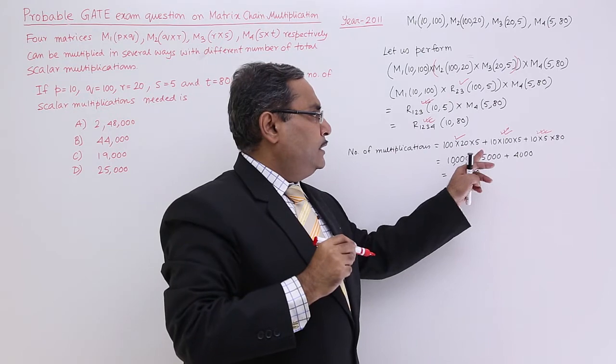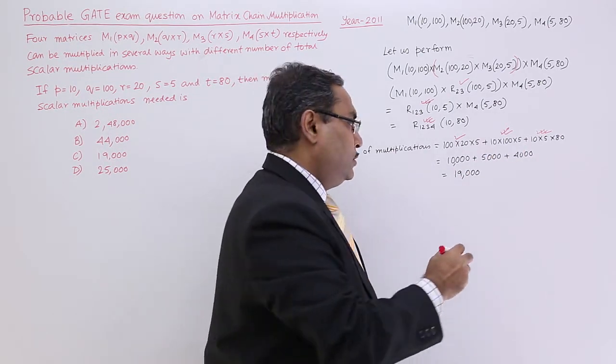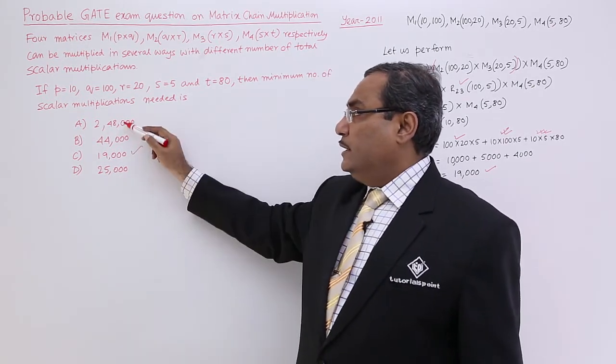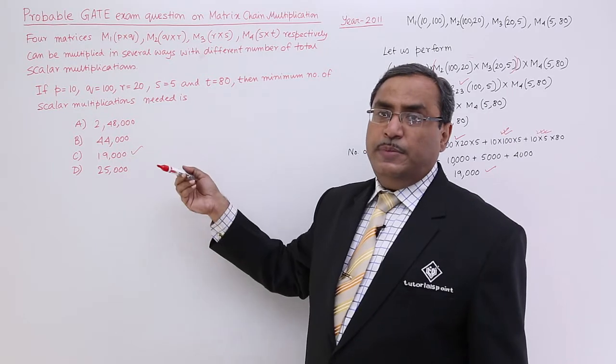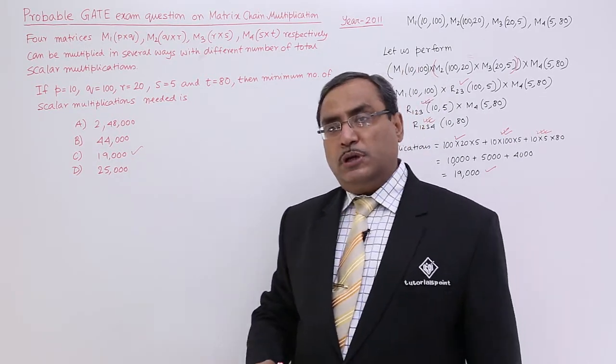This is obviously, 10,000, it is 5,000 and it is 4,000. Go on adding, it is 19,000. So, 19,000 is the minimum multiplication required and 19,000 is matching with this. And you see here, 19,000 is the minimum one. So, 19,000 is matching. So, I shall be going for option number C.